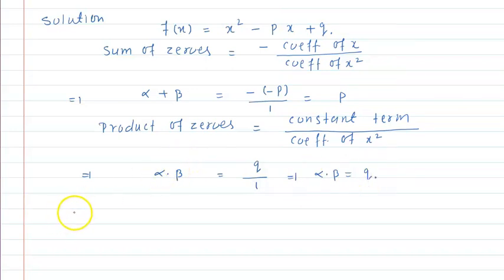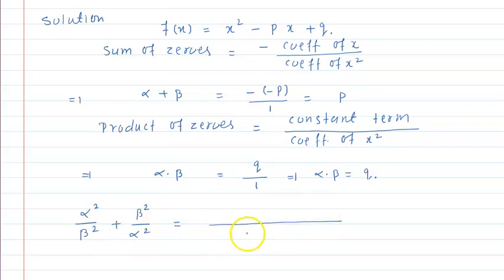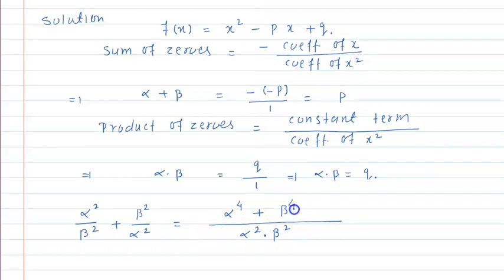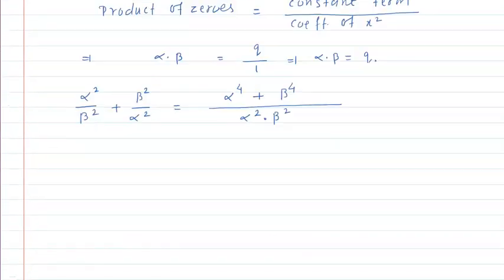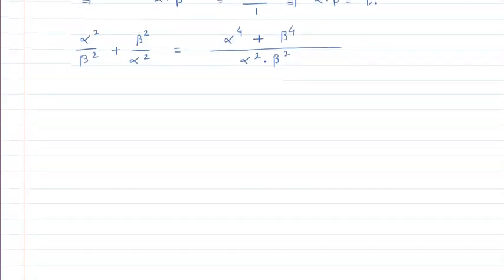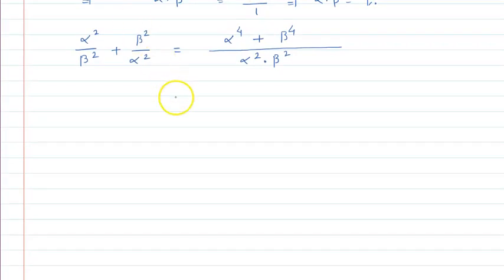तो अब हमने जो value find out करनी है वो है: α²/β² + β²/α². यहाँ पर LCM लेना है, तो LCM होगा α²β². So this becomes (α⁴ + β⁴) / (α²β²). अब हमें α⁴ + β⁴ को alpha + beta और alpha × beta के form में convert करना है, क्योंकि हमें वो values दे रखी हैं.